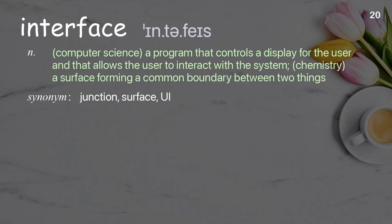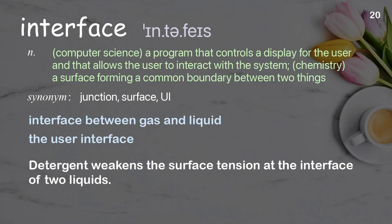Interface: (Computer science) A program that controls a display for the user and allows the user to interact with the system. (Chemistry) A surface forming a common boundary between two things. Examples: Interface between gas and liquid. The user interface. Detergent weakens the surface tension at the interface of two liquids.